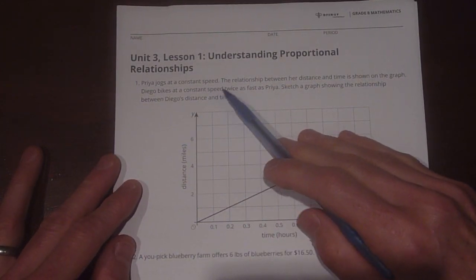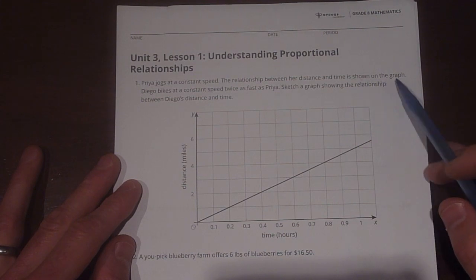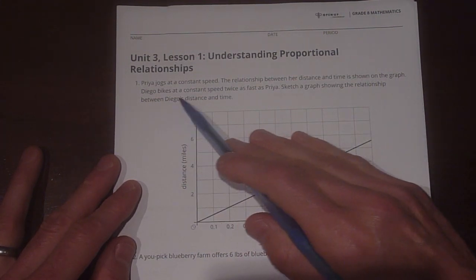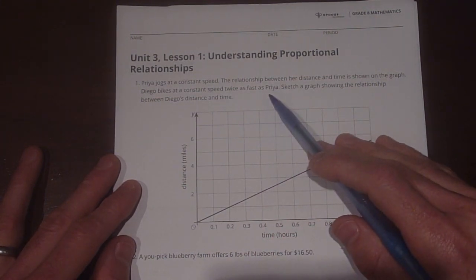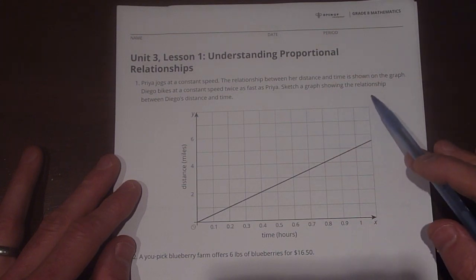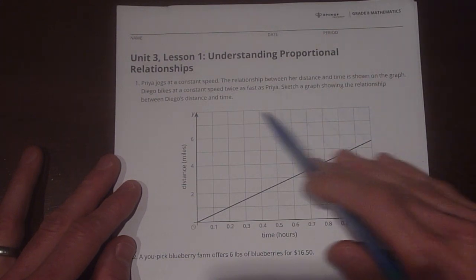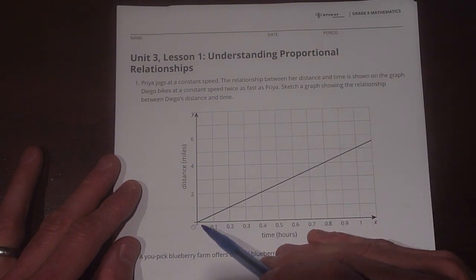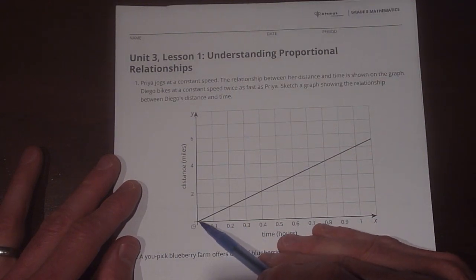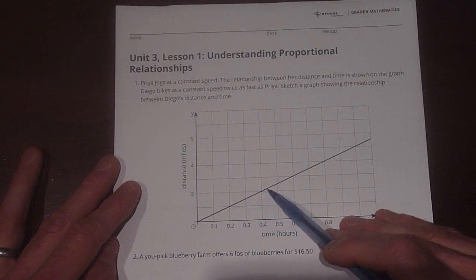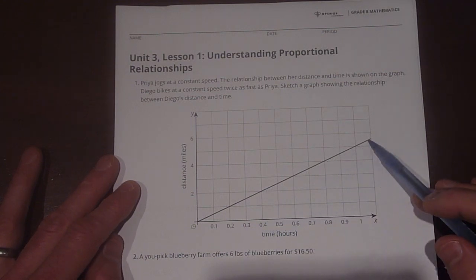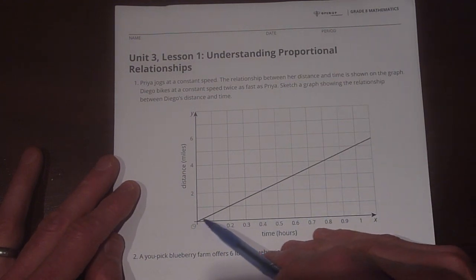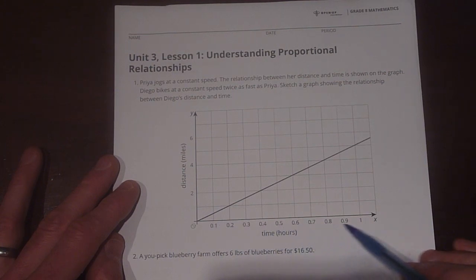Priya jogs at a constant speed. The relationship between her distance and time is shown on the graph. Diego bikes at a constant speed twice as fast as Priya. Sketch a graph showing the relationship between Diego's distance and time. Okay, so we know that if this is Priya's graph here, right here, that she is jogging along. And these are .1, .2 all the way up to 1.